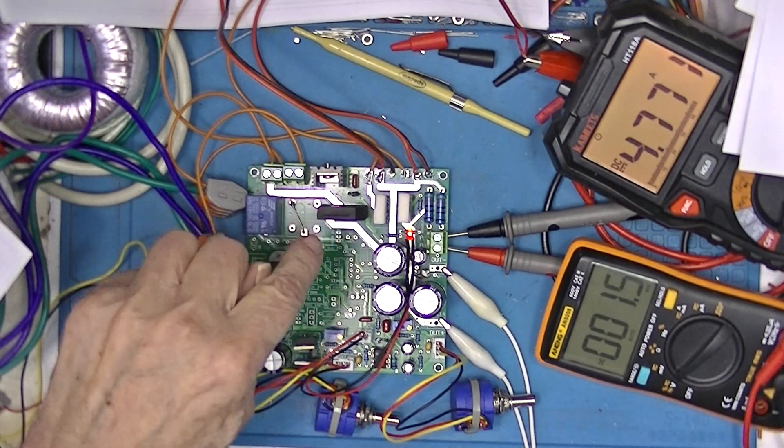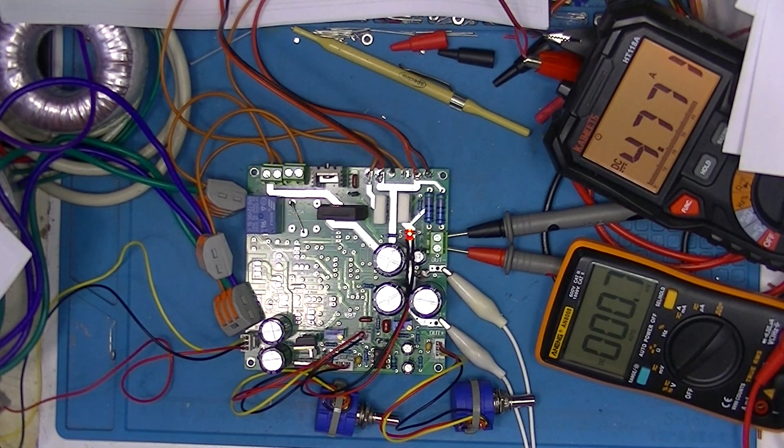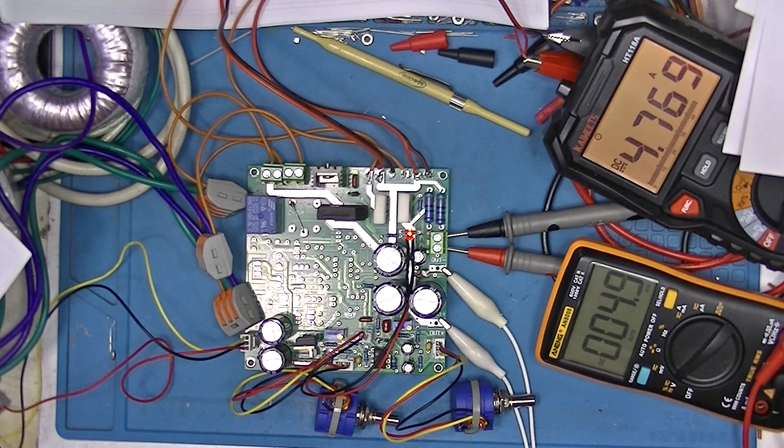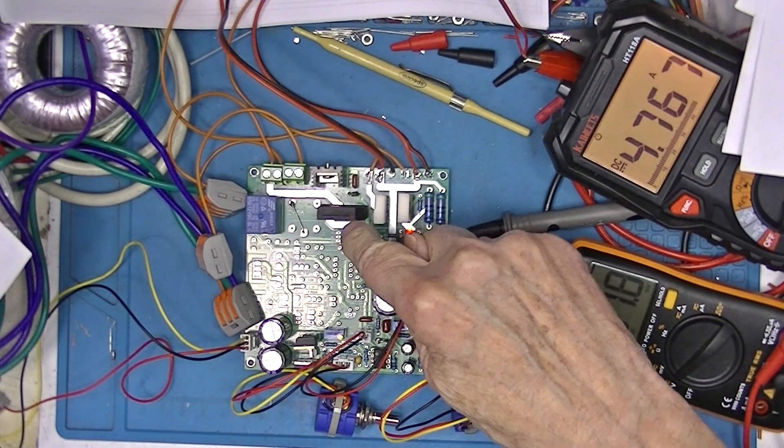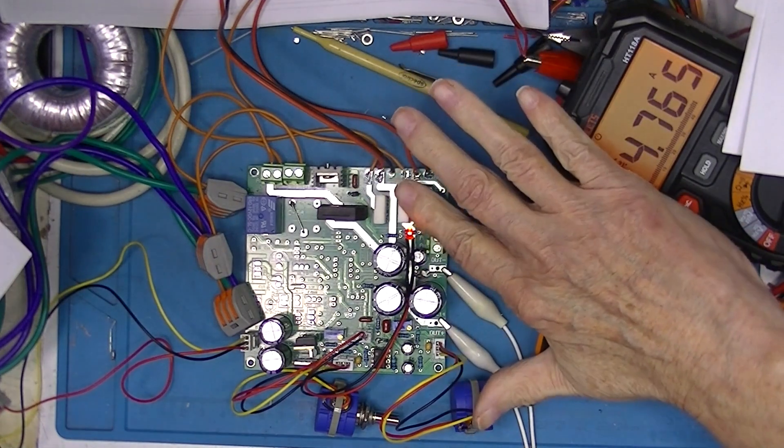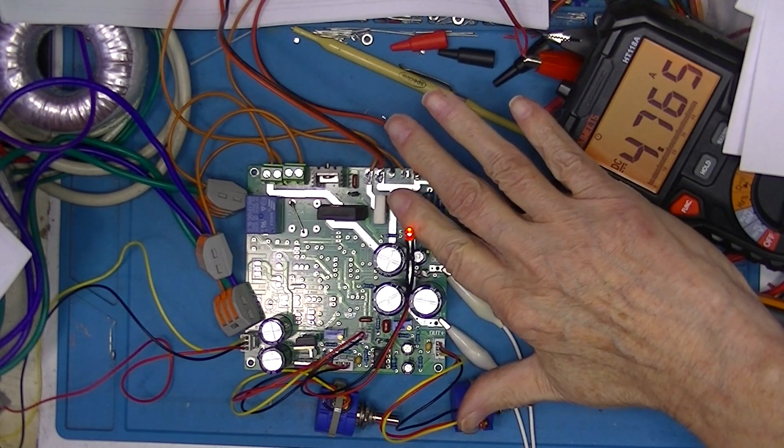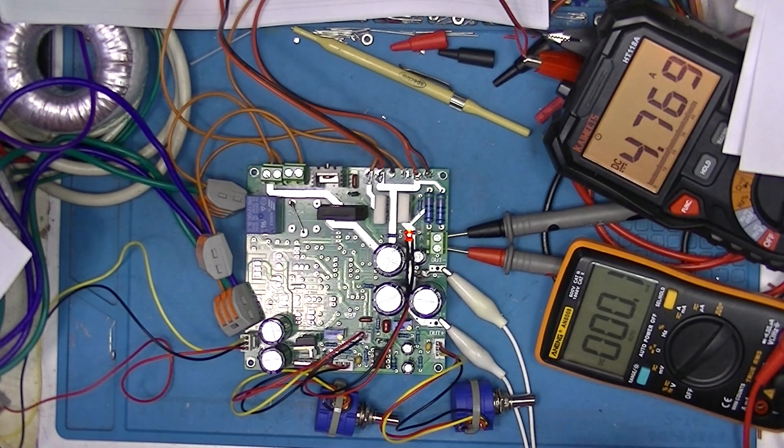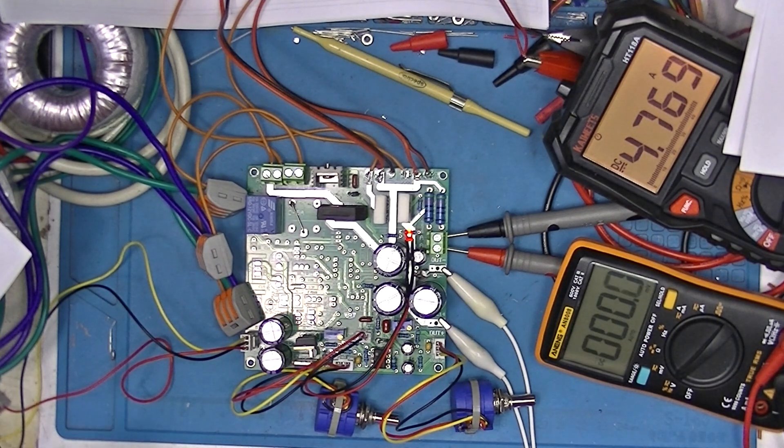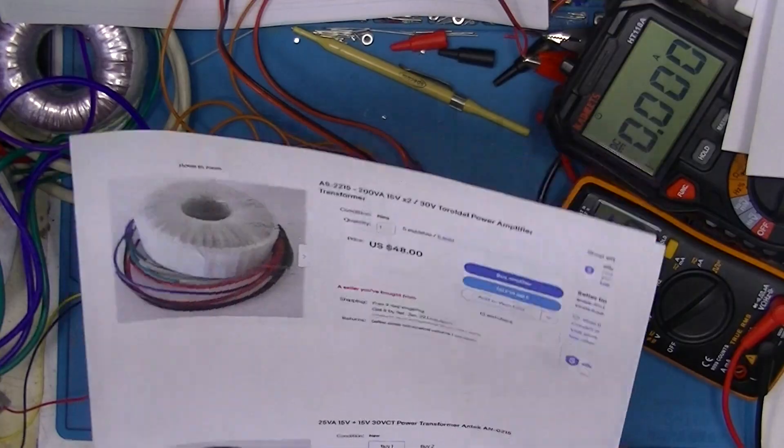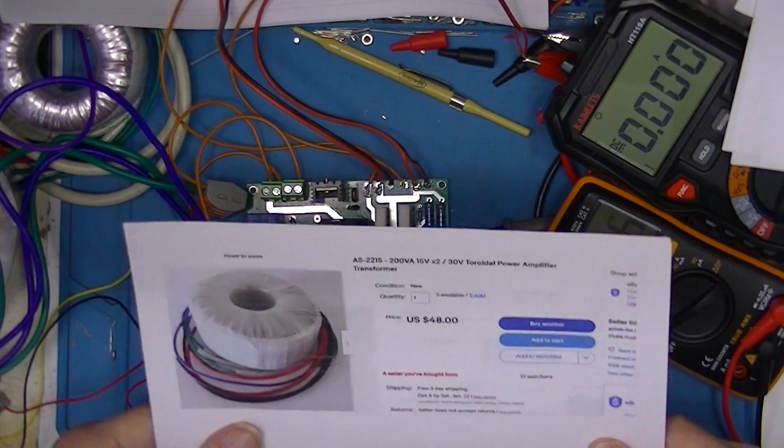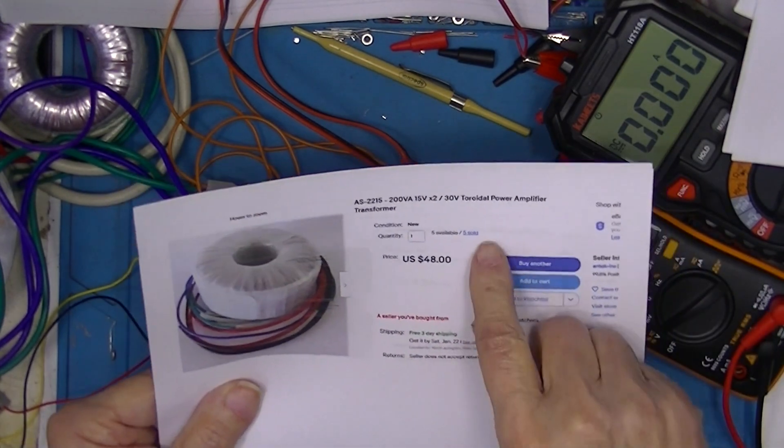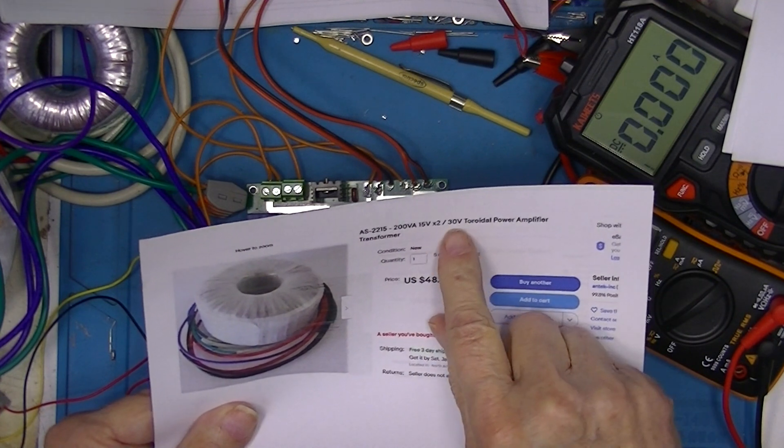This bridge rectifier is terribly hot. I'm going to have to consider putting a heat sink on that if I can. That's ridiculous. The reason I'm using my hands is because my battery went dead on my infrared thermometer. The transformers I'm using are both toroidal, they're both from the same company.